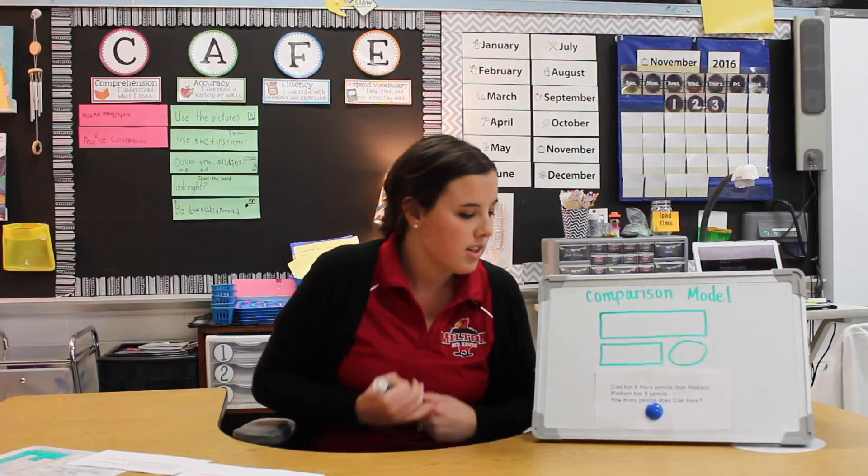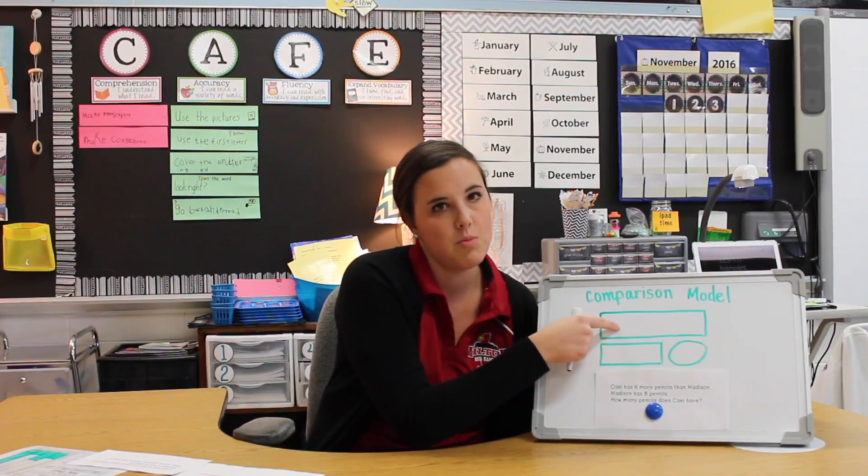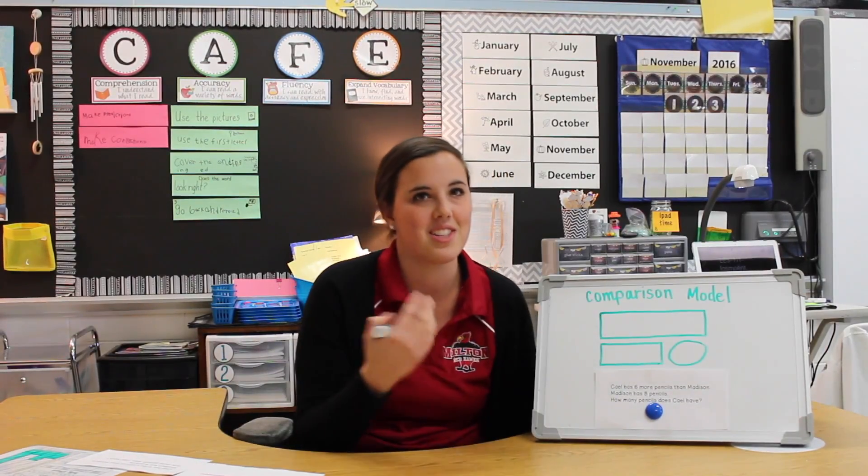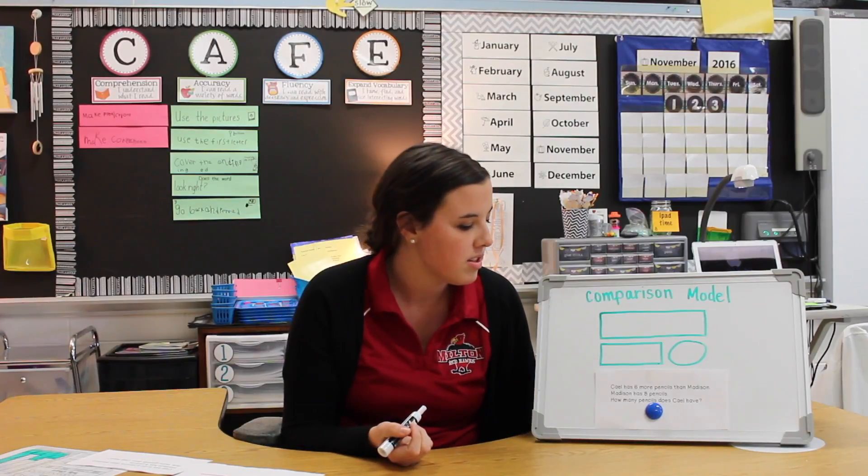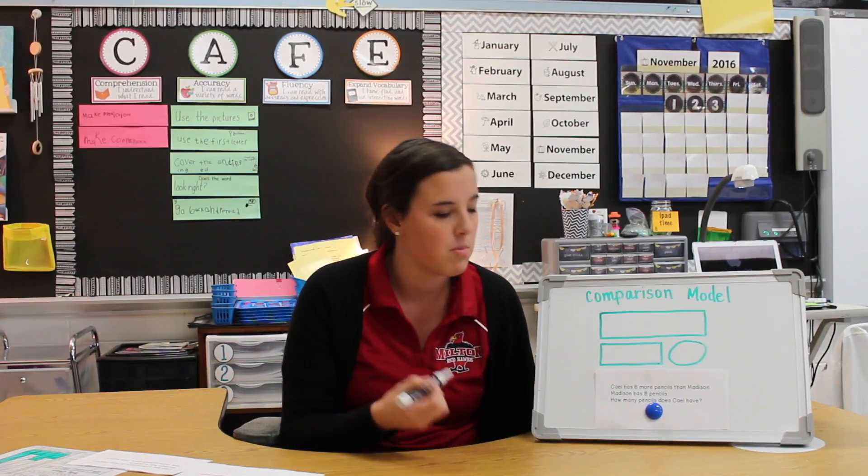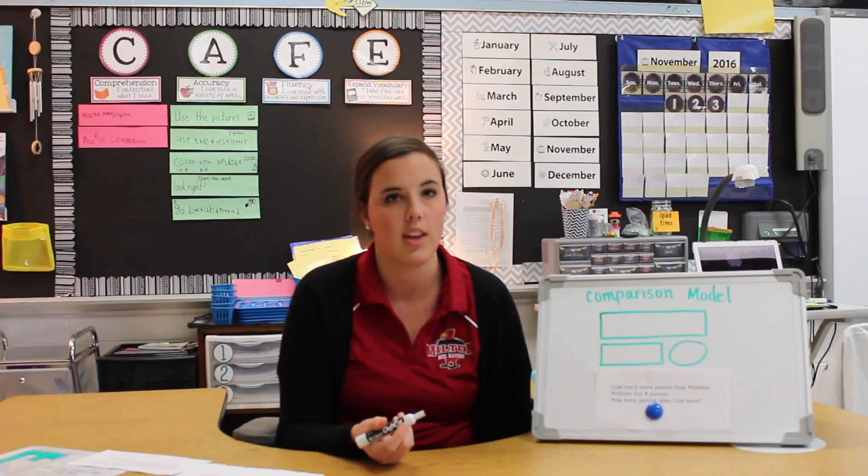To start, students can think about which partner in the story has a larger quantity. In this story it says Cal has six more pencils than Madison, so we know that Cal has more.